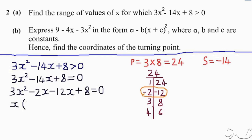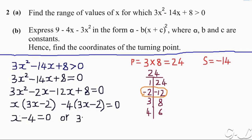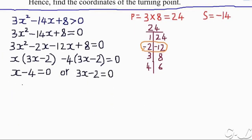After factorizing, the common factor in the first two terms is x, so x goes outside the brackets, giving x(3x minus 2). Then for the second part, we factorize negative 12x plus 8, giving negative 4(3x minus 2). The expressions in brackets are the same, so we get: x minus 4 equals 0, or 3x minus 2 equals 0. This gives x equals 4 and x equals 2 over 3.